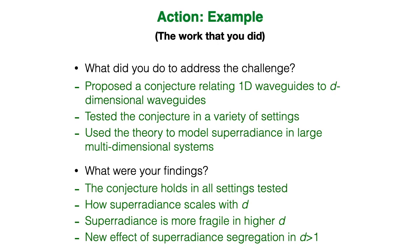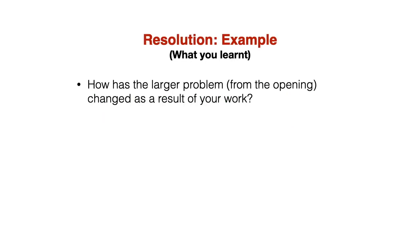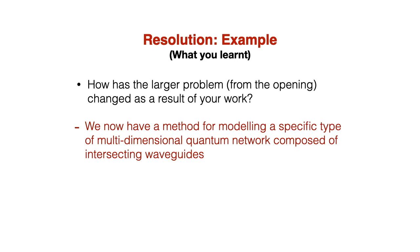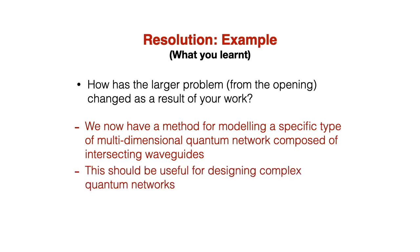We also found that superradiance is more fragile in higher dimensions, and we discovered a new effect of superradiance segregation in dimensions larger than 1. And finally, moving to the resolution: how has the larger problem from the opening changed as a result of our work? We now have a method for modeling a specific type of multi-dimensional quantum network composed of intersecting waveguides, and this should be useful for designing complex quantum networks.